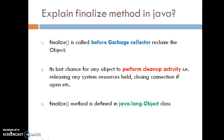The finalize method gets executed just before the garbage collector runs on an object. So whenever the garbage collection process is about to run on an object, the finalize method will get executed before that.